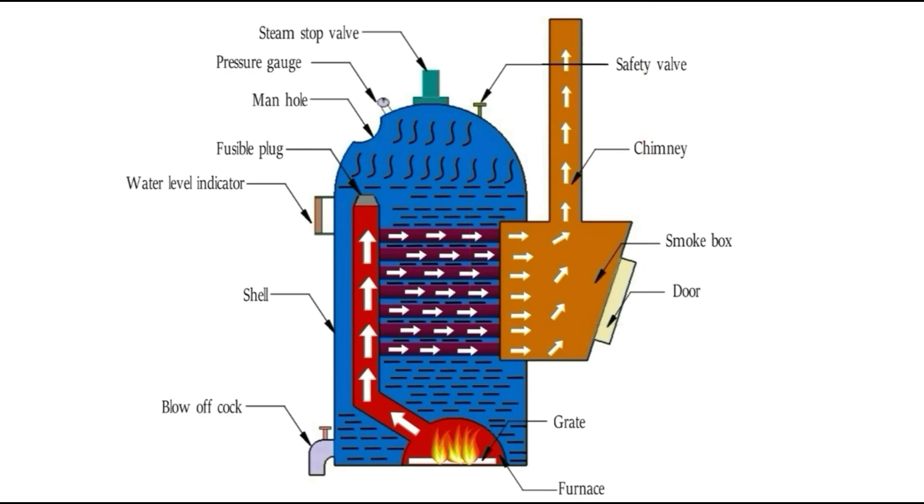The fire tubes are surrounded by the water so that the water can extract the heat from the flue gases and get converted into steam. As we know, the density of steam is less than water, it will be collected at the top side also known as pressure vessel.